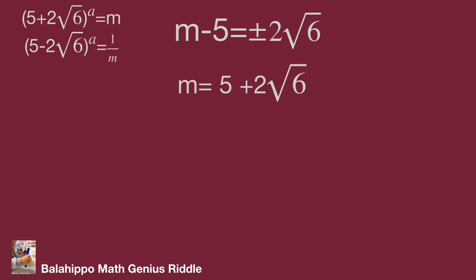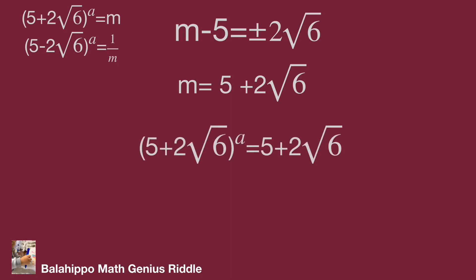If m = 5 + 2√6, substituting m back gives (5 + 2√6)^a = (5 + 2√6)^1, so a = 1.